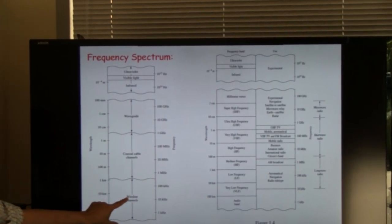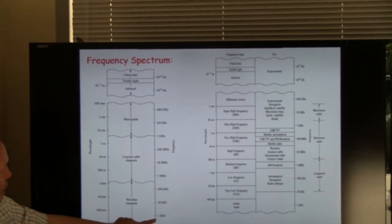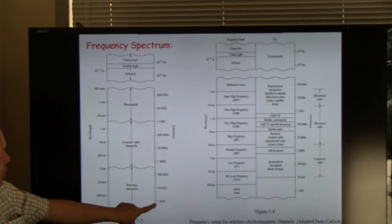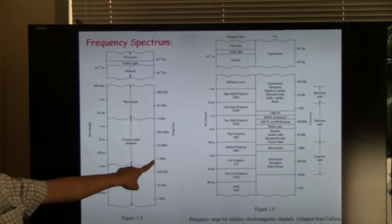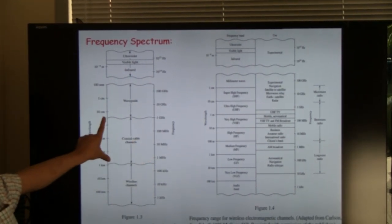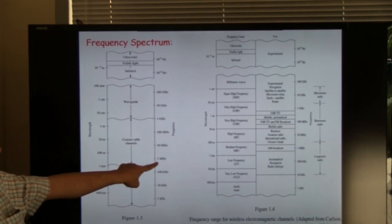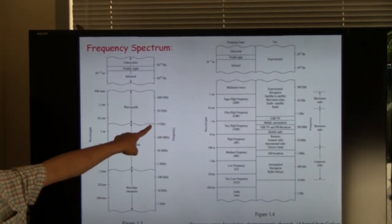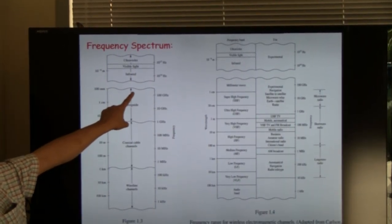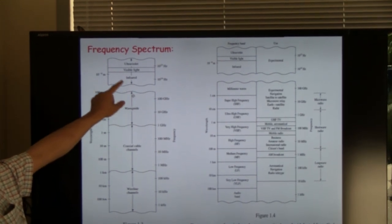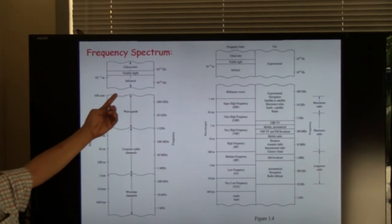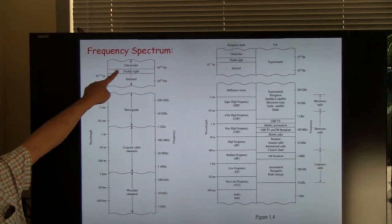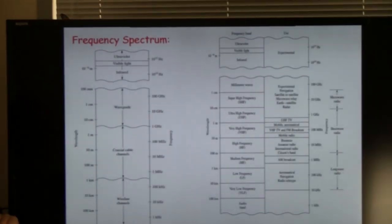Now for the wireline channel, basically most of the wireline channel is at a frequency band from one kilohertz to about one megahertz. For coaxial cable, you can go from one megahertz to about a gigahertz. For waveguide, you can go to about 100 gigahertz. Beyond that, you really have to do wireless communication in the infrared or the visible light region or the ultraviolet region.